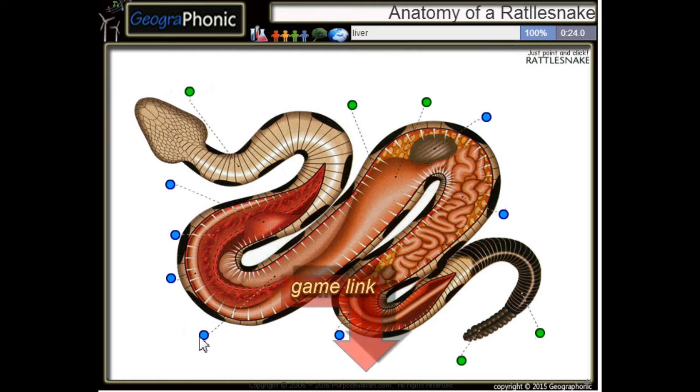This is its liver. Here we see the heart. This is a lung. This is the intestine.